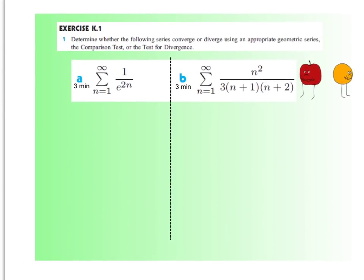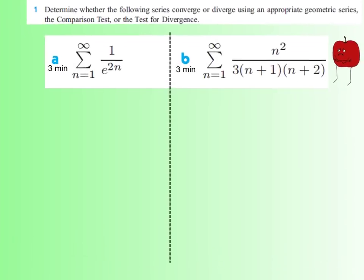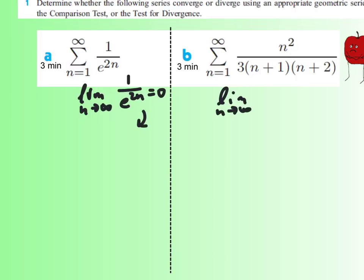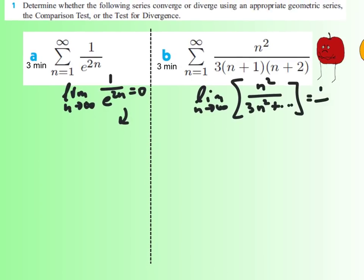On to the homework. On both problems, the first thing I would do is make sure the limit as n goes to infinity of the sequence itself goes to zero. The first one does, so we can move forward. But the limit as n goes to infinity of the second one gives n squared over 3n squared plus a bunch of lower terms — that limit goes to 1/3, so we didn't need to go past the divergence test; this one diverges immediately.